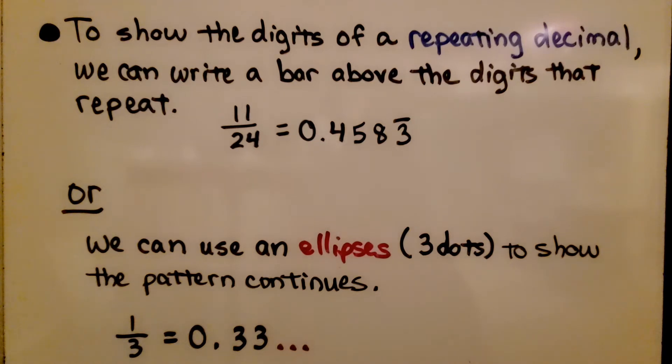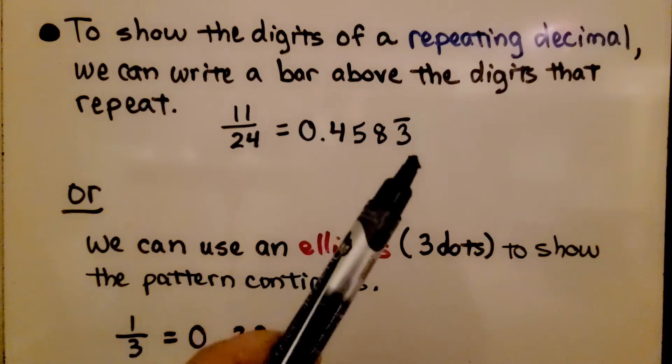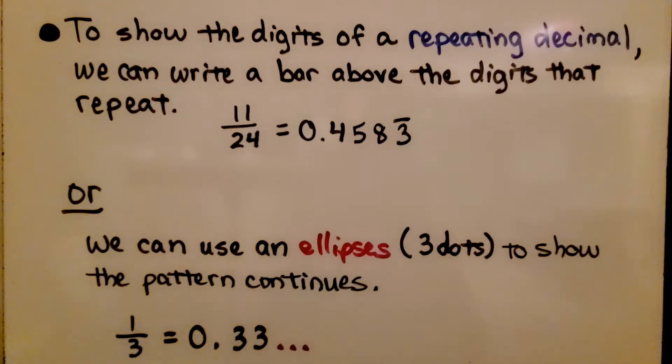To show the digits of a repeating decimal, we can write a bar above the digits that repeat. For 11/24, only the 3 repeats, so we write a bar above the 3.